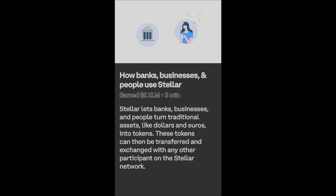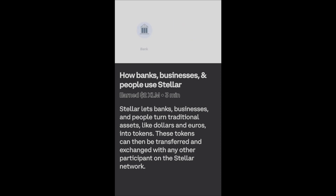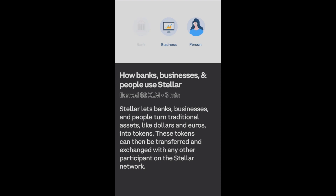And if she has some US dollar tokens left over, she can return them to Main Street Bank and get her dollars back right in her bank account — or she can hang on to them, or trade them for another token. Any asset can be turned into a token on Stellar: traditional currencies, cryptocurrencies, real estate, investments. So whether you're a bank, a business, or a person, Stellar makes it possible to quickly and efficiently issue, exchange, and transfer tokens in an entirely new way.